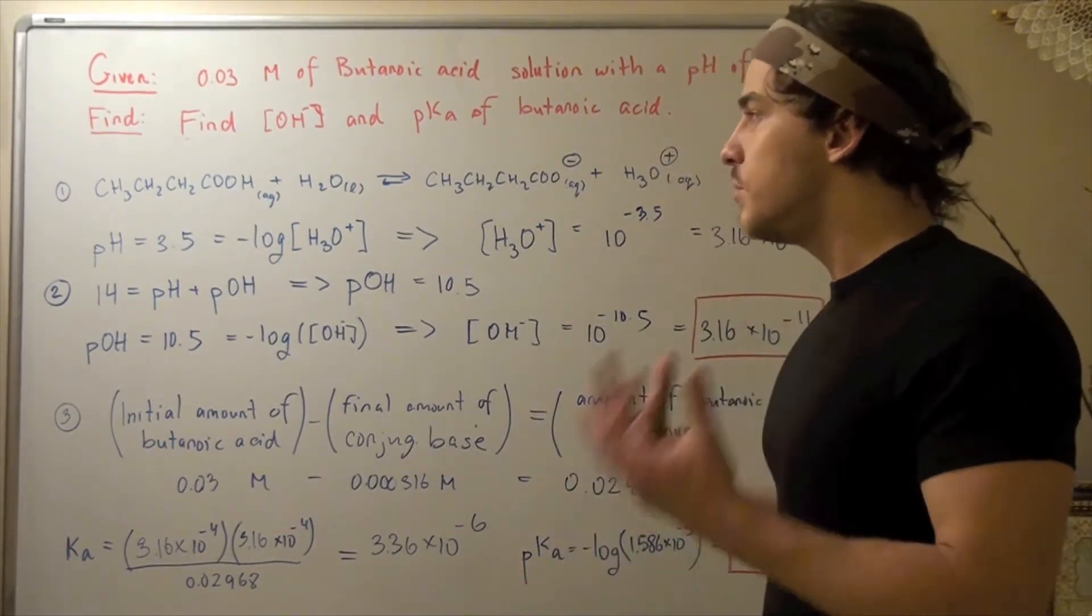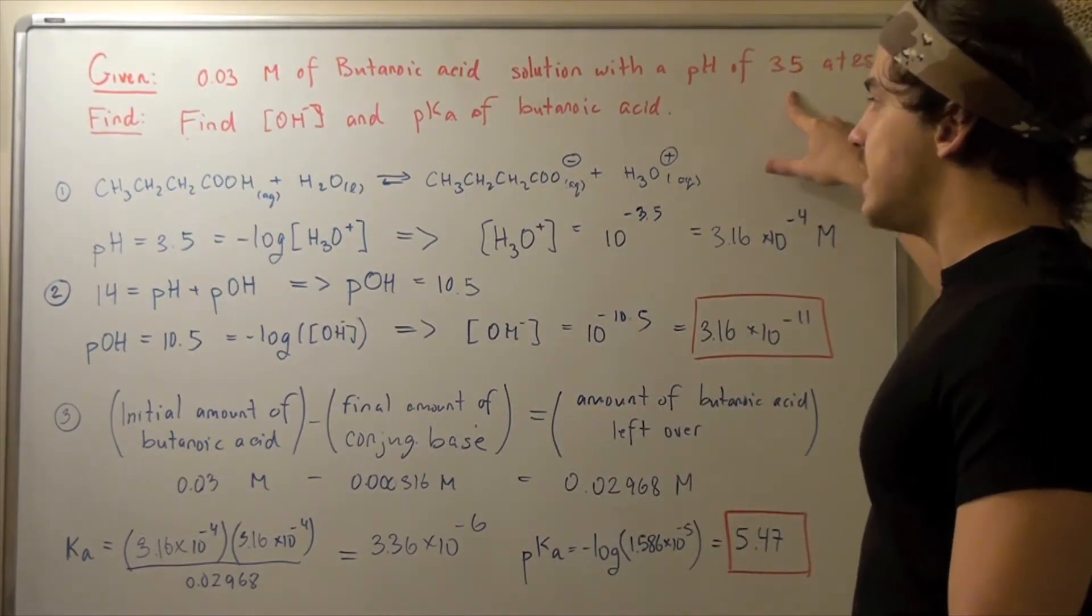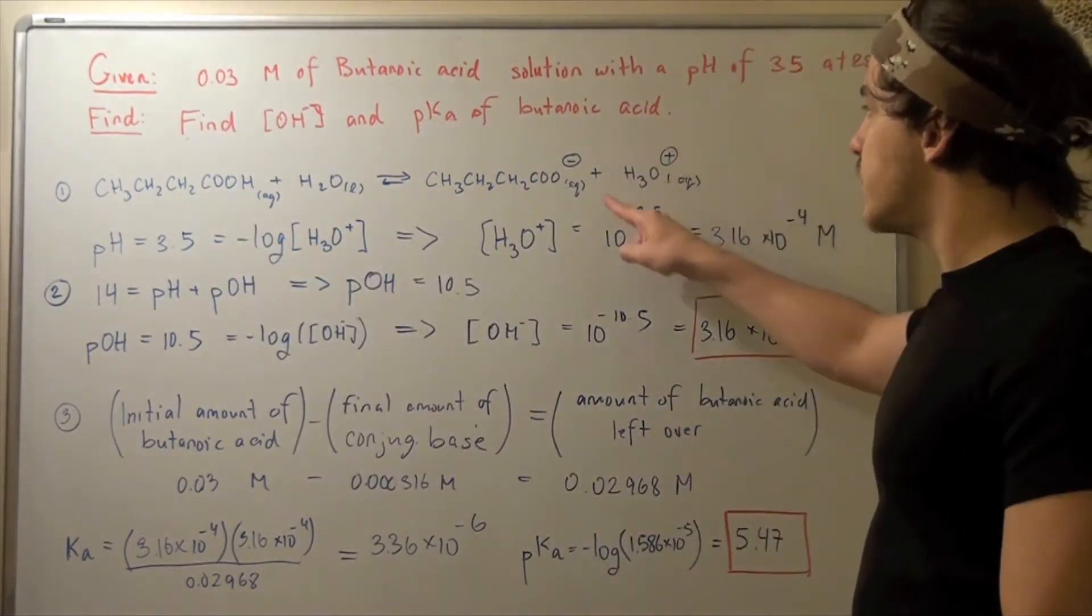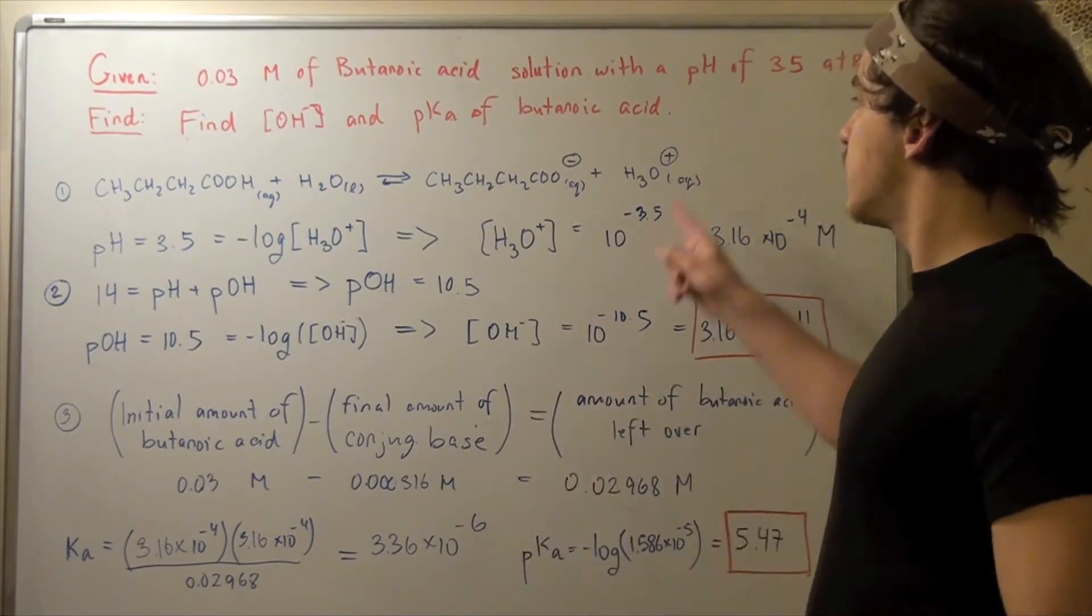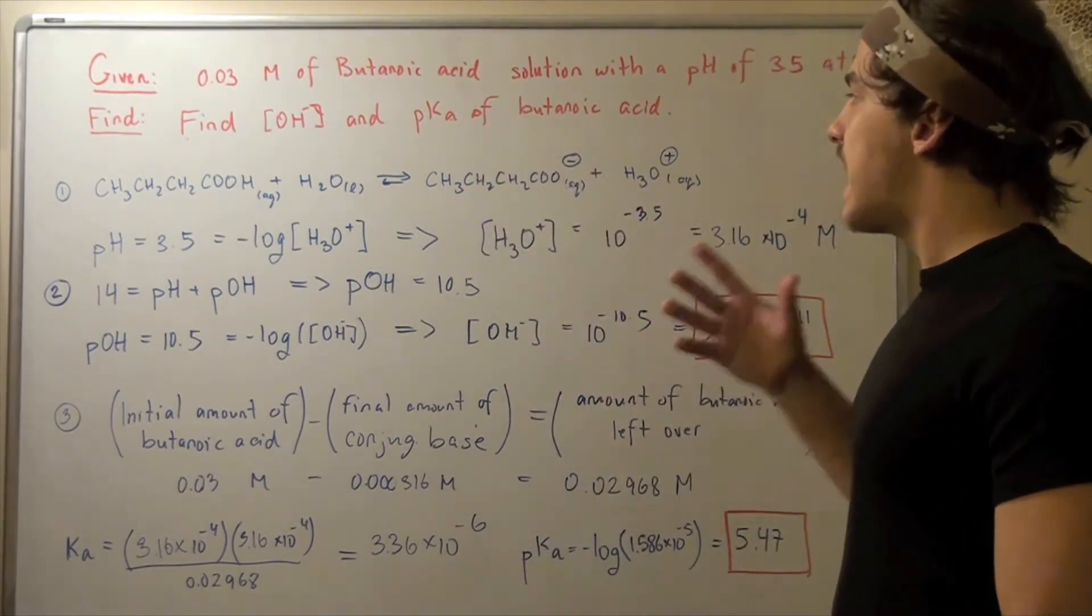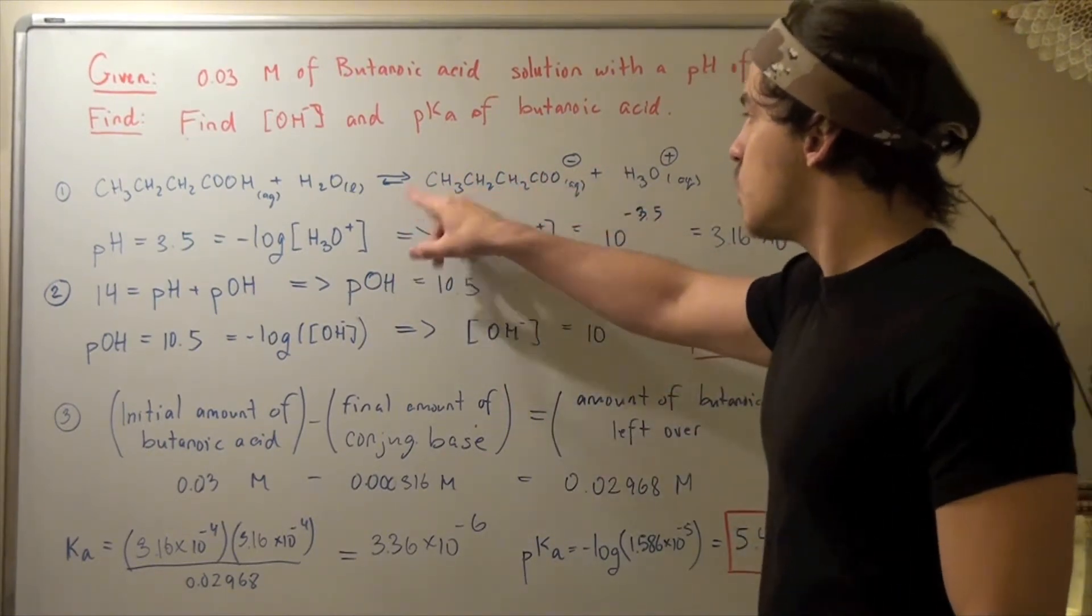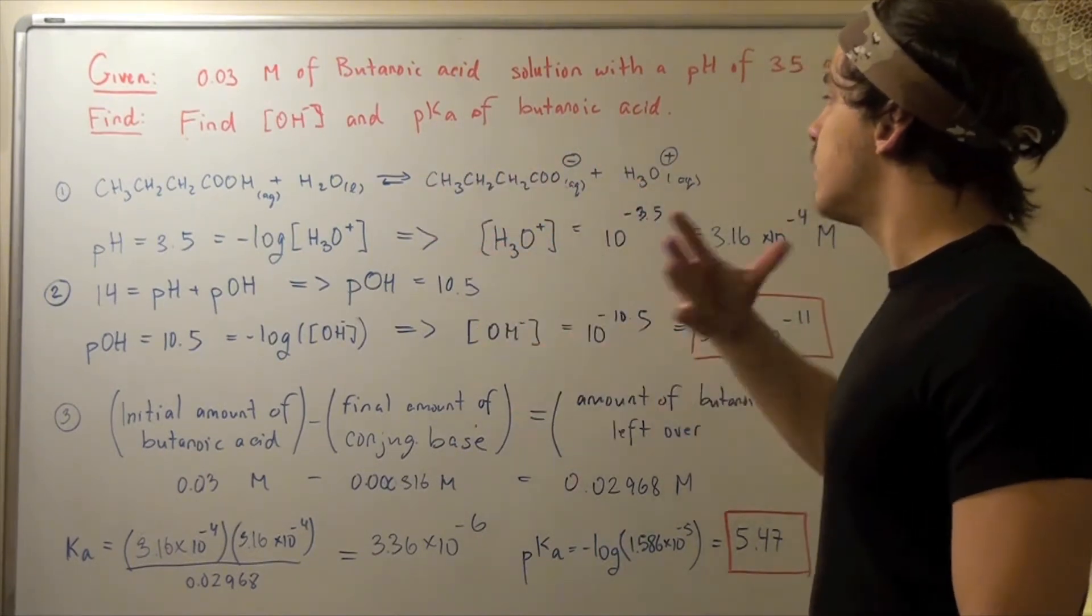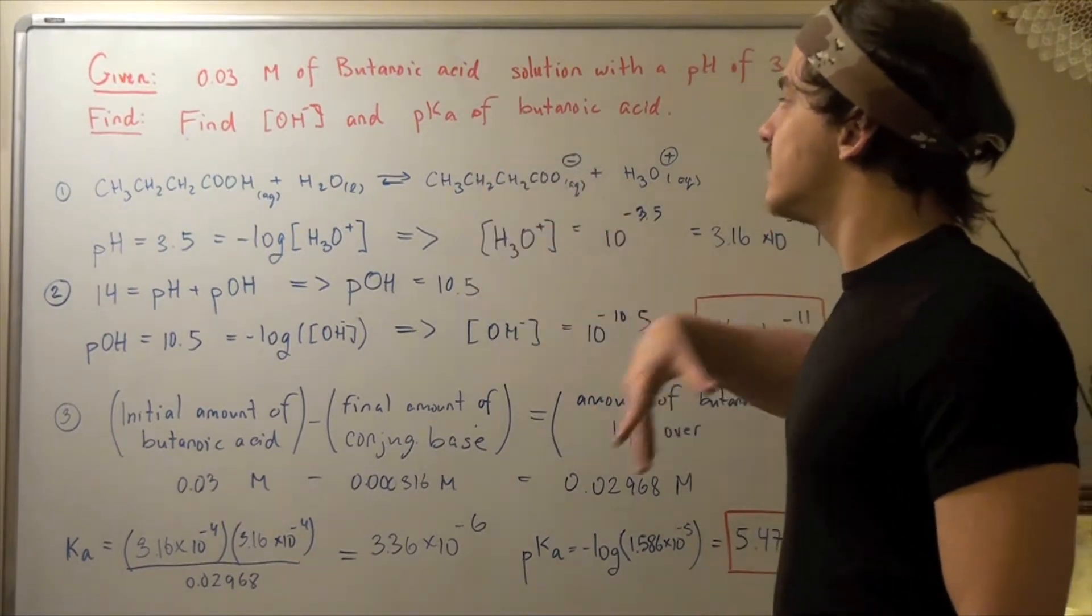We want to find the equilibrium concentration. At equilibrium, our pH is 3.5. That means we could use the log formula to find the concentration of hydronium. After we find the concentration of hydronium, the concentration of conjugate base is the same thing. That's because 1 mole and 1 mole, our ratio is 1 to 1. So whatever the amount in molar of hydronium is, the conjugate base is the same.